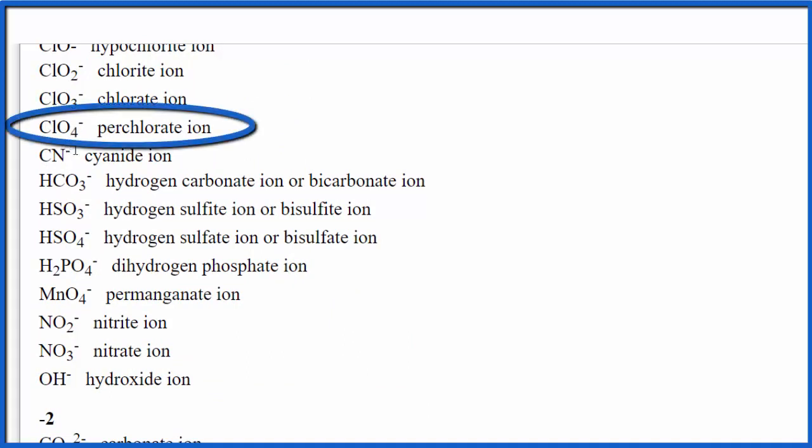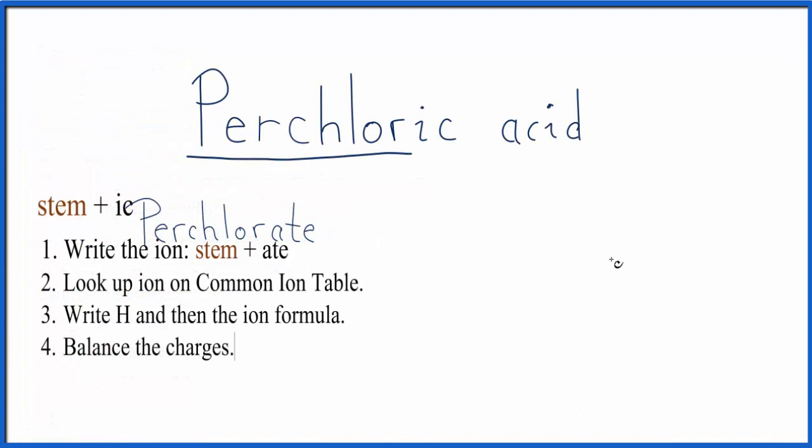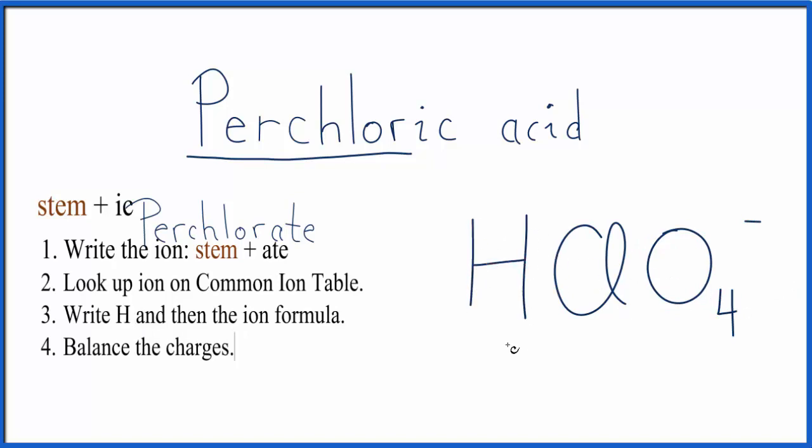It's ClO4-, so we remember ClO4-, and we go back to our chart. We write ClO4-, and then we write H in front of ClO4-, that's what makes this an acid.